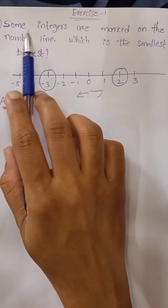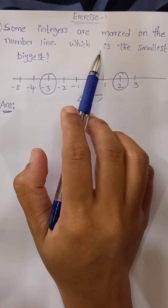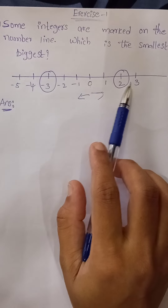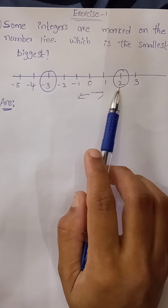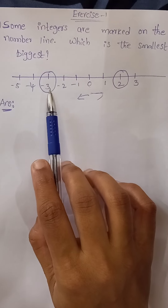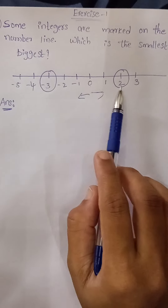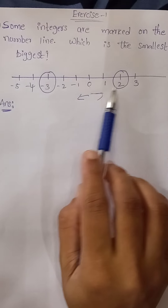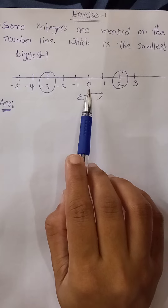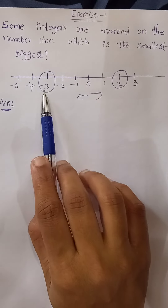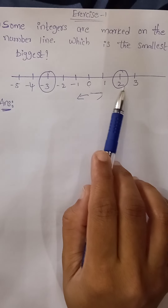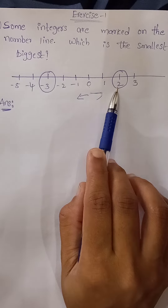Some integers are marked on the number line — which is the smallest and which is the biggest value? The marked integers are 2 and minus 3. Just now we discussed that positive values are always greater than 0 and negative values are less. Here 2 is the positive value and minus 3 is the negative value.